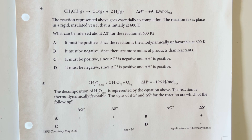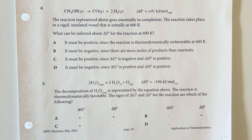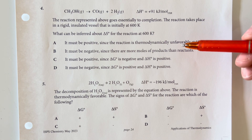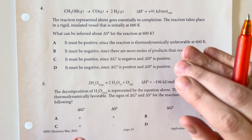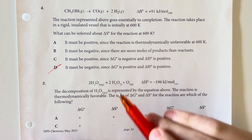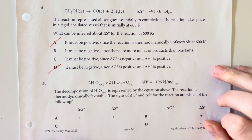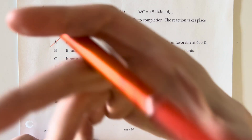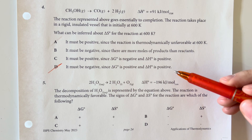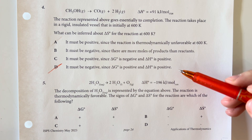The reaction represented above goes essentially to completion, taking place in a rigid insulated vessel initially at 600 Kelvin. What can be inferred about delta S of the reaction at 600 Kelvin? Since it goes to completion, it is a favorable reaction, meaning delta G must be negative. We can eliminate option D because it states delta G is positive.